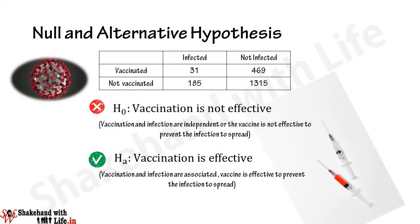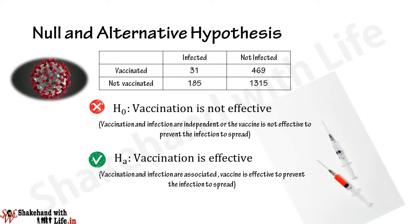We proceed to solve this problem. First we state the null and alternative hypotheses. For the test of independence, the null hypothesis H0 is that vaccination is not effective — meaning there is no association between vaccination and the infection. The alternative hypothesis H1 is that vaccination is effective, implying that vaccination and infection are not independent but associated, and the vaccination is effective to prevent the spread of the infection.